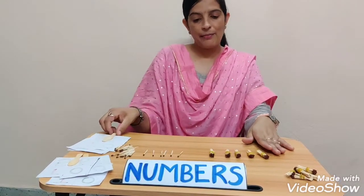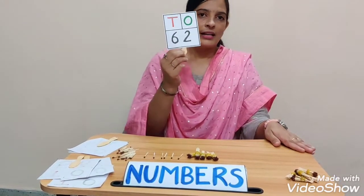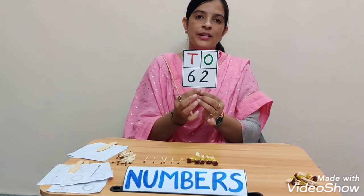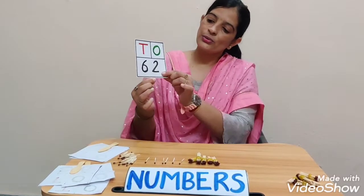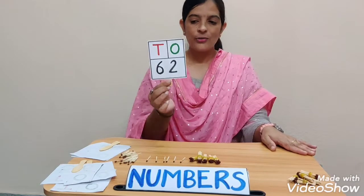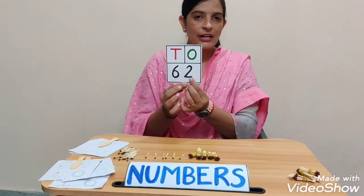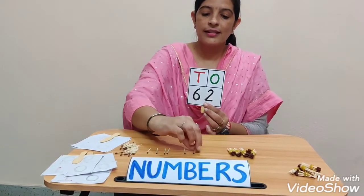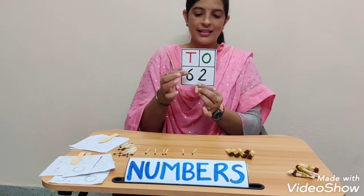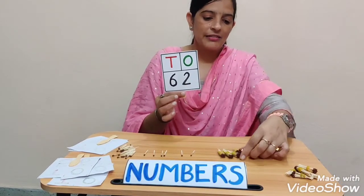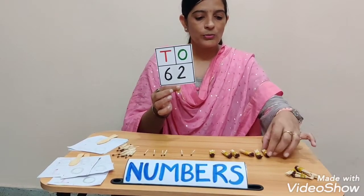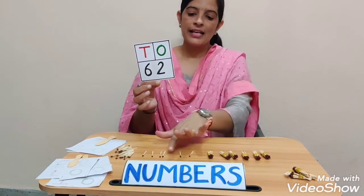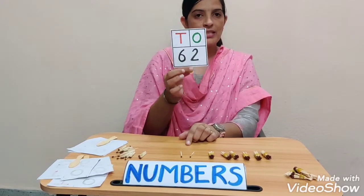Next, I have a number and you have to make the collection of 10s and 1s. What is this number? It is 62. How many ones do I have to take? I have to take 2 ones. And how many tens? Yes, 6. So I will take 6 bundles: 1, 2, 3, 4, 5, 6. So 6 tens and 2 ones — the number will be 62.